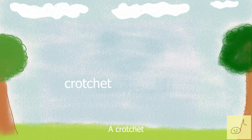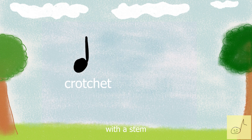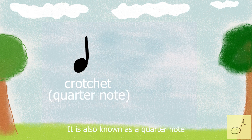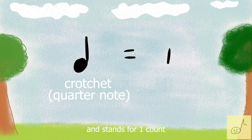A crotchet has a filled oval note head with a stem. It is also known as a quarter note and stands for one count. Can you hear the crotchet?